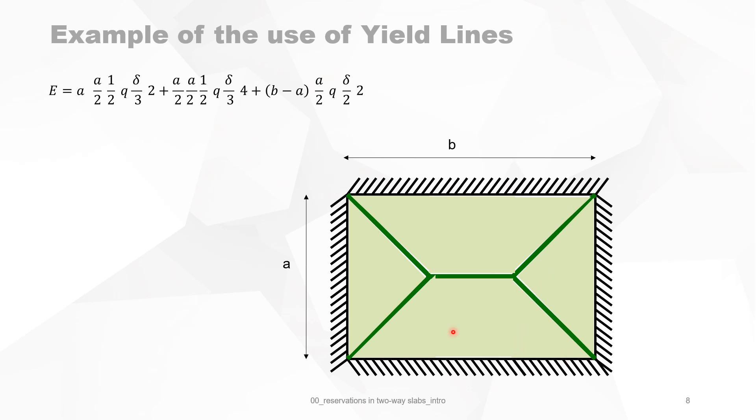Then we have four triangles like here and there also. So in total we have four triangles, so it means one side is a/2 times a/2 divided by 2 times Q, and then the mean displacement is delta divided by 3, and we got four of those triangles.